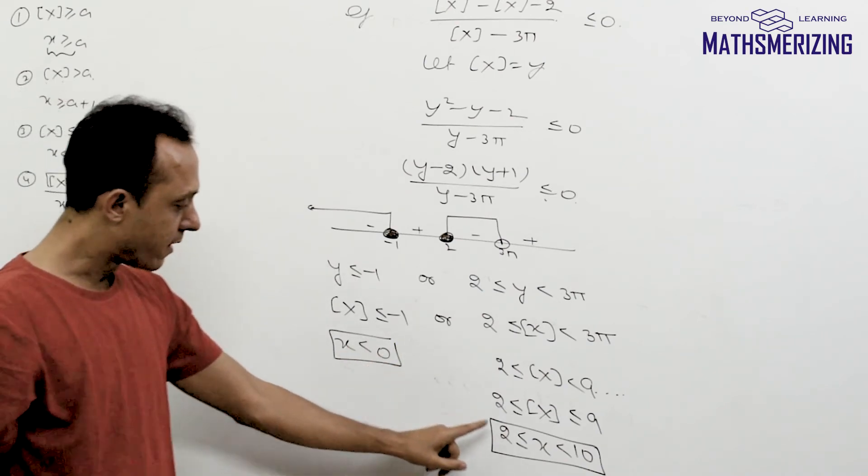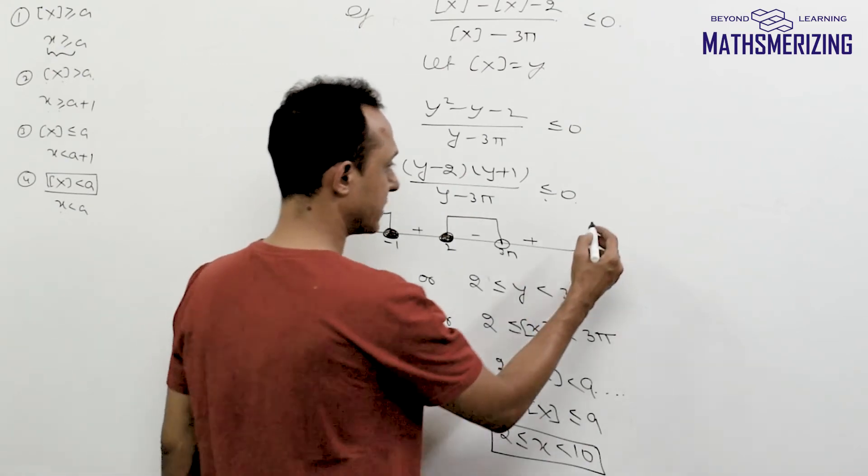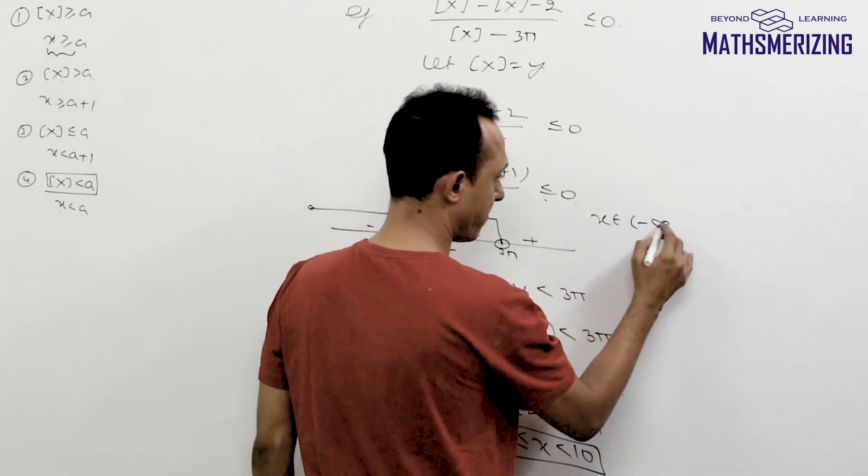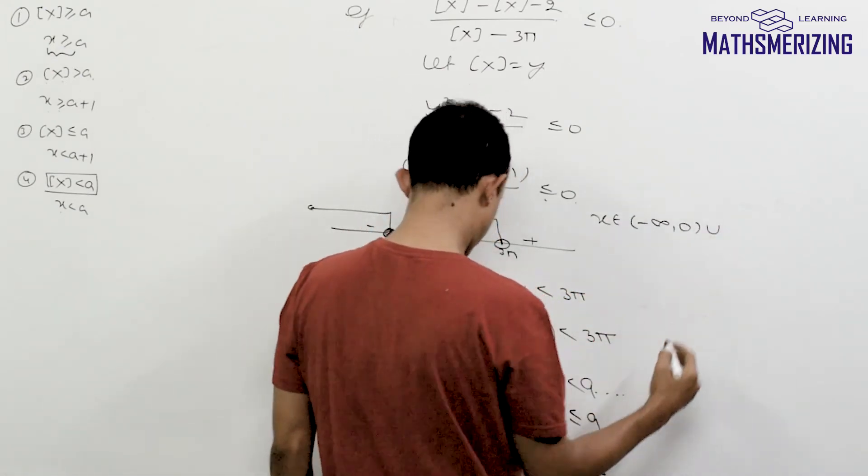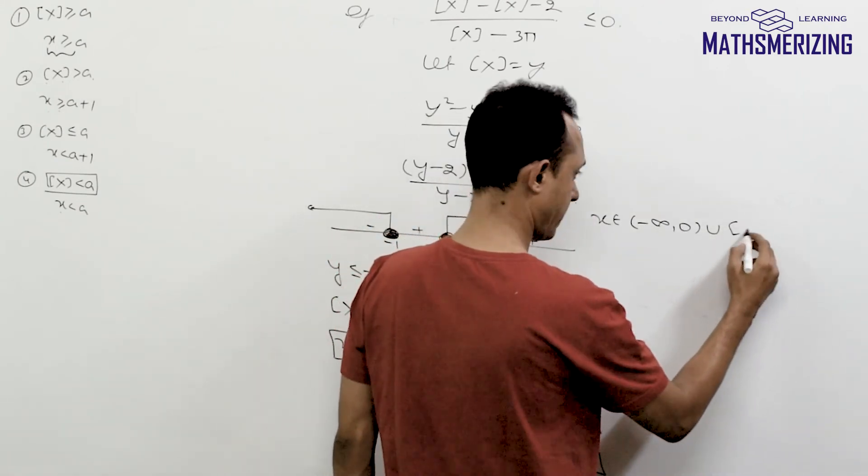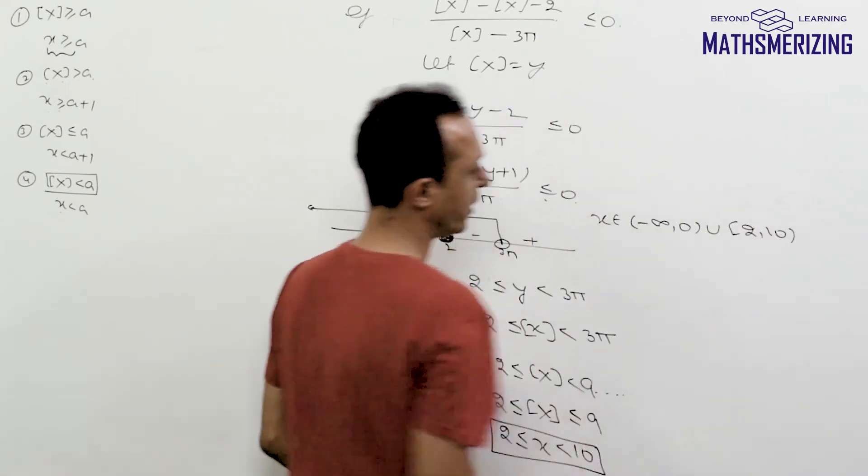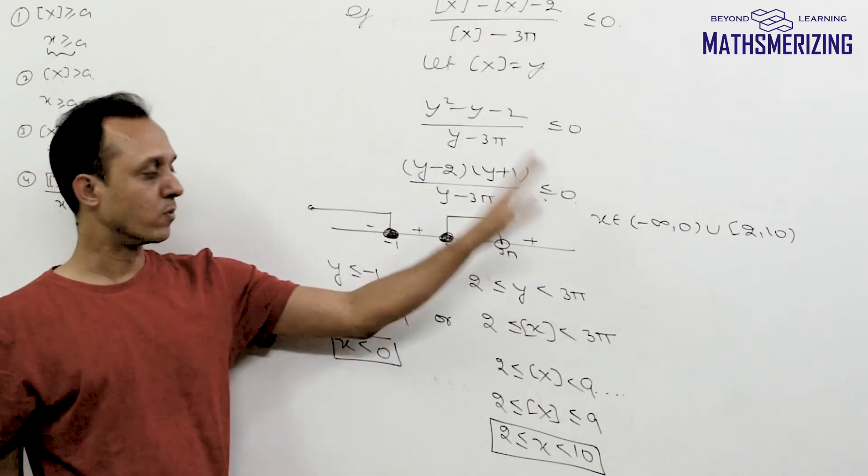So the answer to this question simply will be either the value of x is less than 0 or the value of x will lie between 2 and 10. So x belongs to from minus infinity to 0 union from 2 to not included 10. So that is the answer to this inequality.